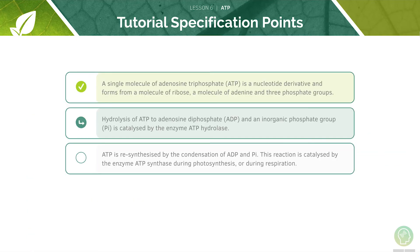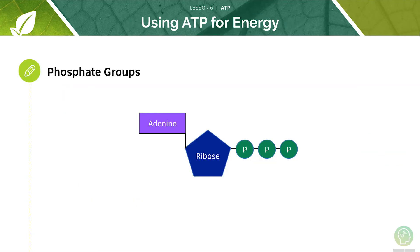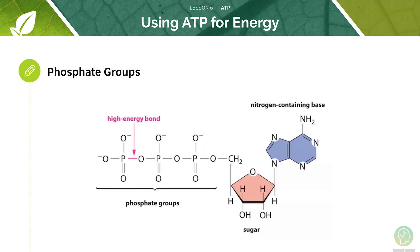Now we'll look at the hydrolysis of ATP. The energy in ATP molecules is stored within the phosphoanhydride bonds between the three phosphate groups. In order to release this energy, the bonds must be broken. This is a more chemical view of ATP — it's important you understand what's going on here. The high energy phosphoanhydride bonds are between the phosphorus of one phosphate molecule and the oxygen of another phosphate molecule.